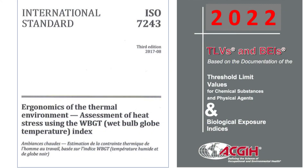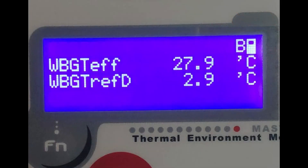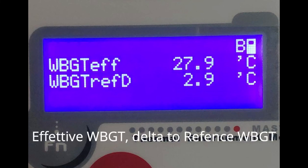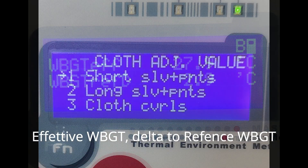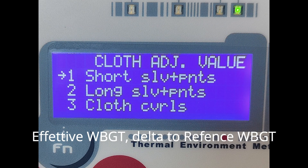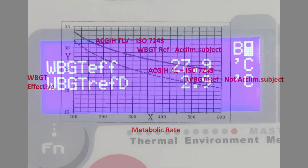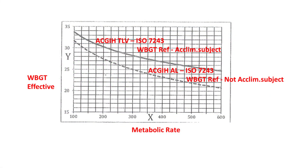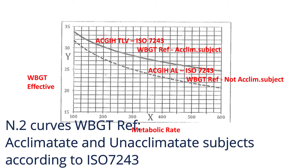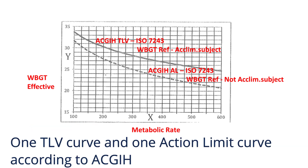According to the ISO 7243 (2017 edition) and ACGIH standards, Heat Shield produces in real-time mode the effective WBGT, which considers the clothing adjustment value, and displays the Delta to the limit — the distance between the effective WBGT value and its limit value, also called WBGT reference by ISO 7243 or TLV and action limit by the ACGIH.